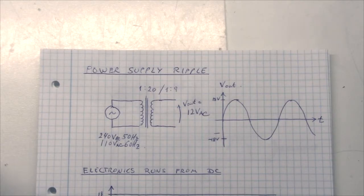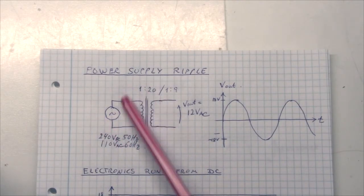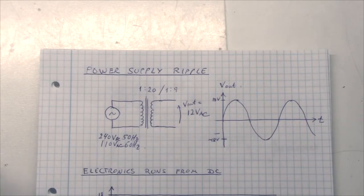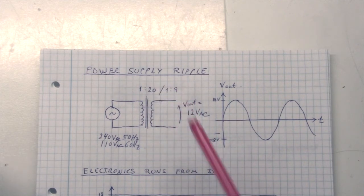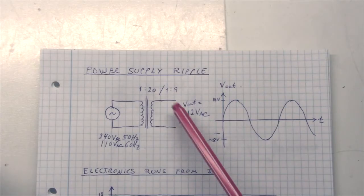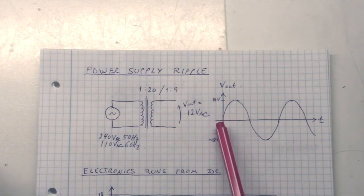So typically to do a power supply you would have 220 volts in, or 110 for the US, going through a transformer. And if we want 12 volt out, the transformer winding ratio would be something like 1 to 20 for Europe, and 1 to 9 for the US. And if we look at the output of the transformer, this 12 volt AC transformer, it will basically look like this, if you can excuse my terrible sine wave drawing skills.